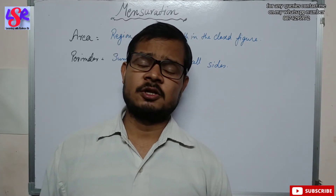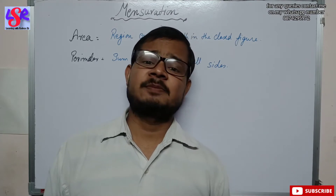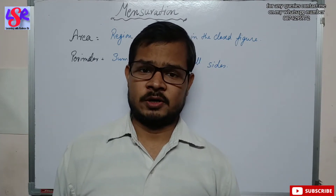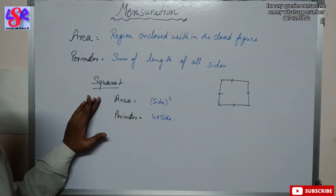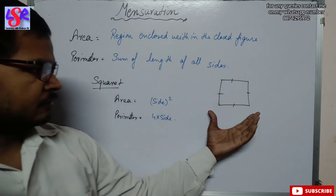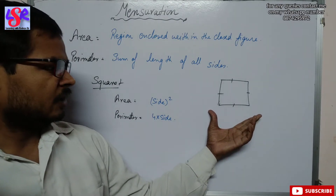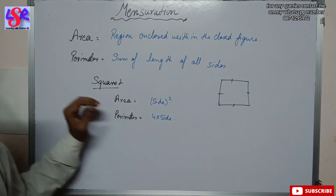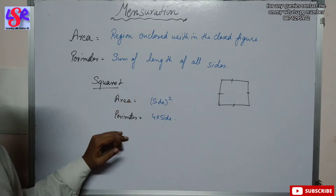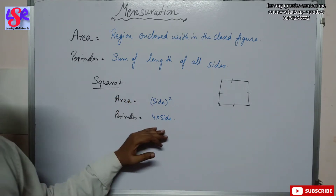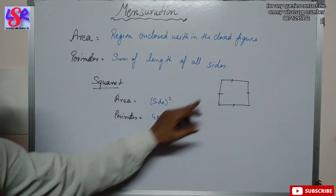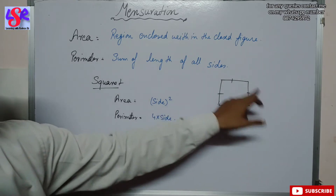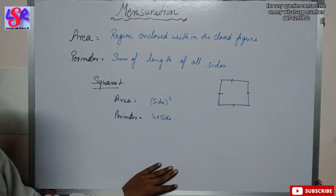We have formulas for area and perimeter for specific figures. For the square, all sides are of equal length. So the area equals side squared, and the perimeter equals 4 times the side, as the sum of all four sides gives the perimeter.